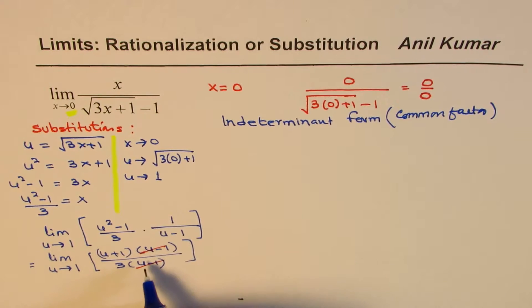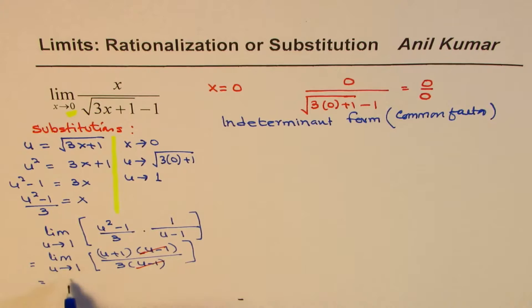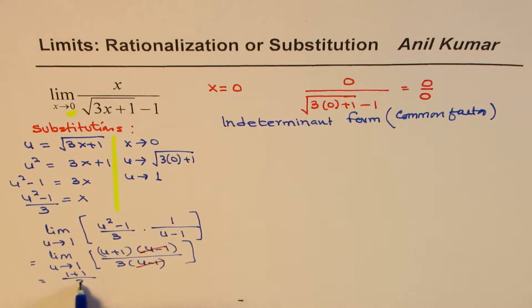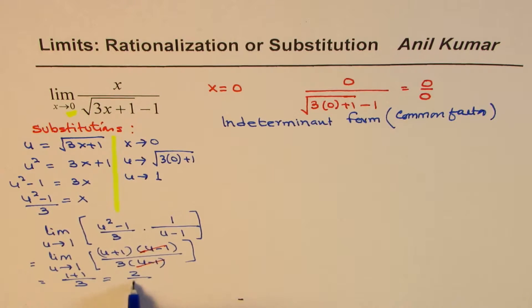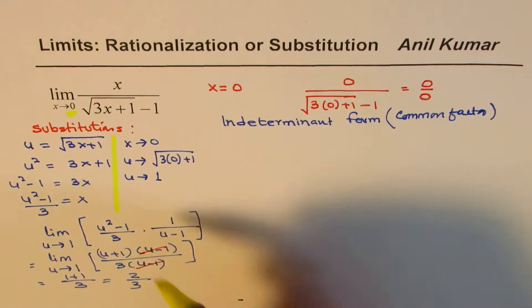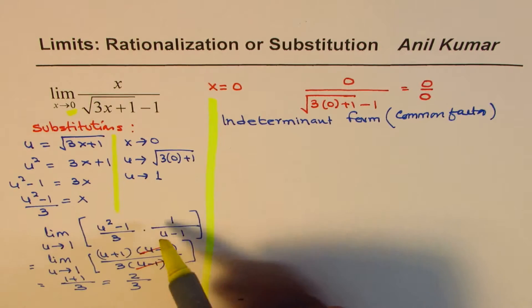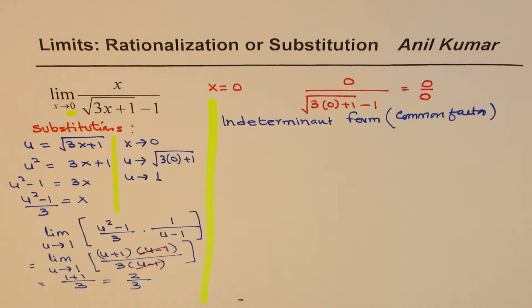What makes it 0 over 0 has been extracted by this substitution and now we can cancel it. As soon as you cancel it you can substitute u as 1. Now there is not a problem. So if you substitute 1 you get 1 plus 1 over 3 which is 2 over 3. This particular method may involve some algebraic manipulation but it is a very effective way of solving such functions.